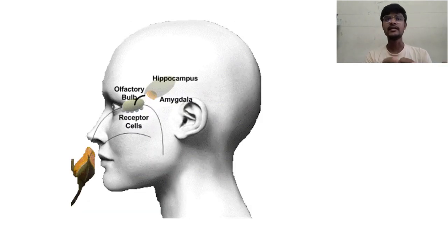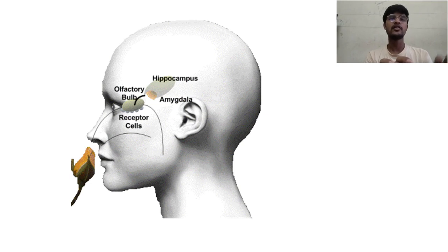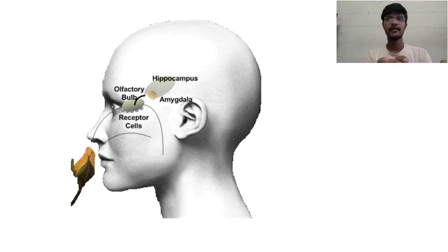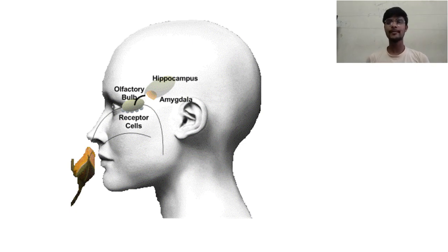As you can see in the diagram, the nose has receptor cells that detect the smell. The conversion of smell into a signal happens in the olfactory bulb present in the nose. From there, the signals are sent to the human brain, where the brain analyzes the smell.